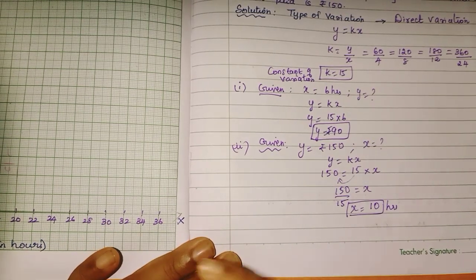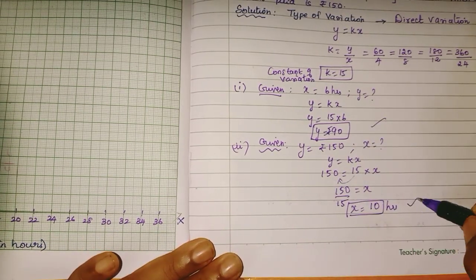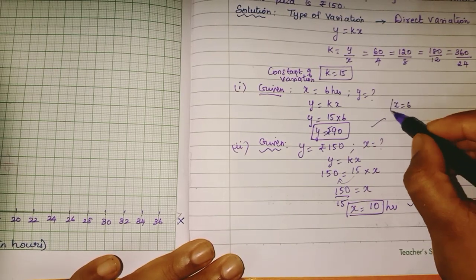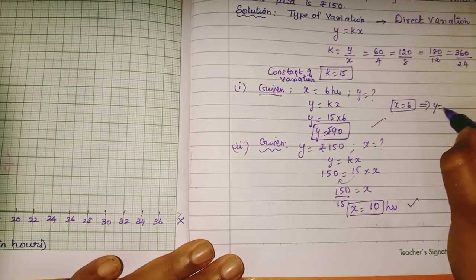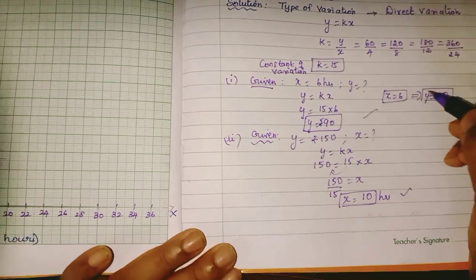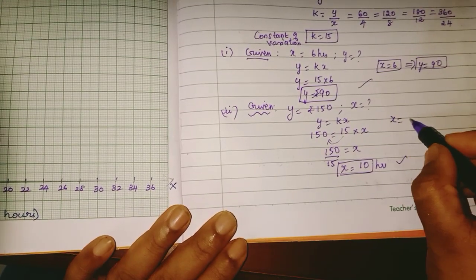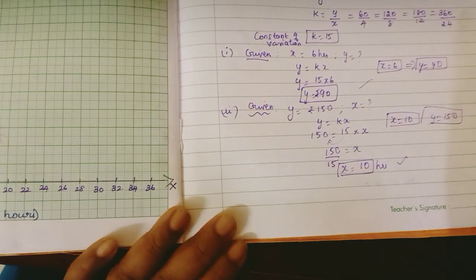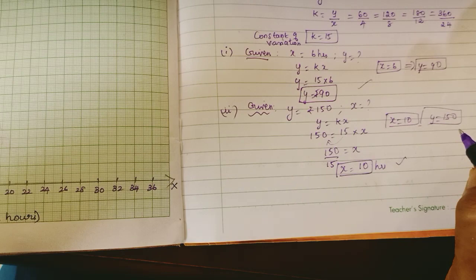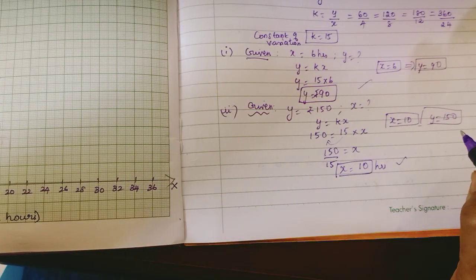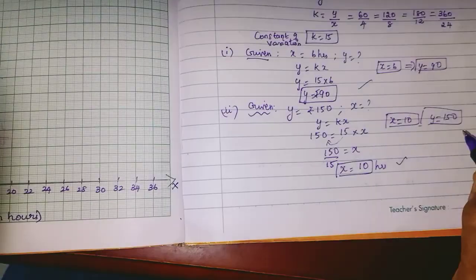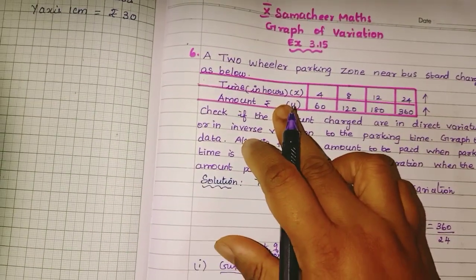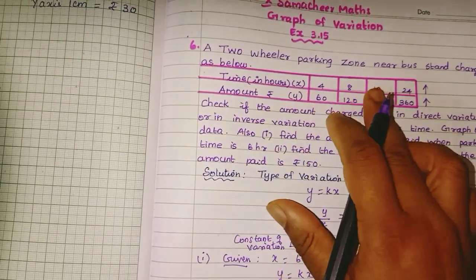Now for the graph, we plot the data. The X-axis has values 4, 8, 12, 24 and we go up to 2, 4, 6, 8 on the time axis. The Y-axis has amounts 60, 120, 180, 360.